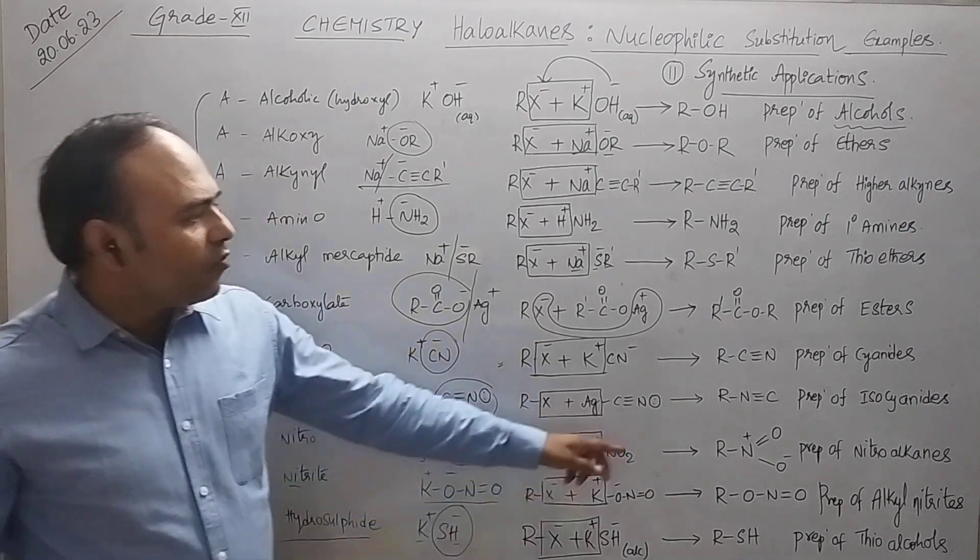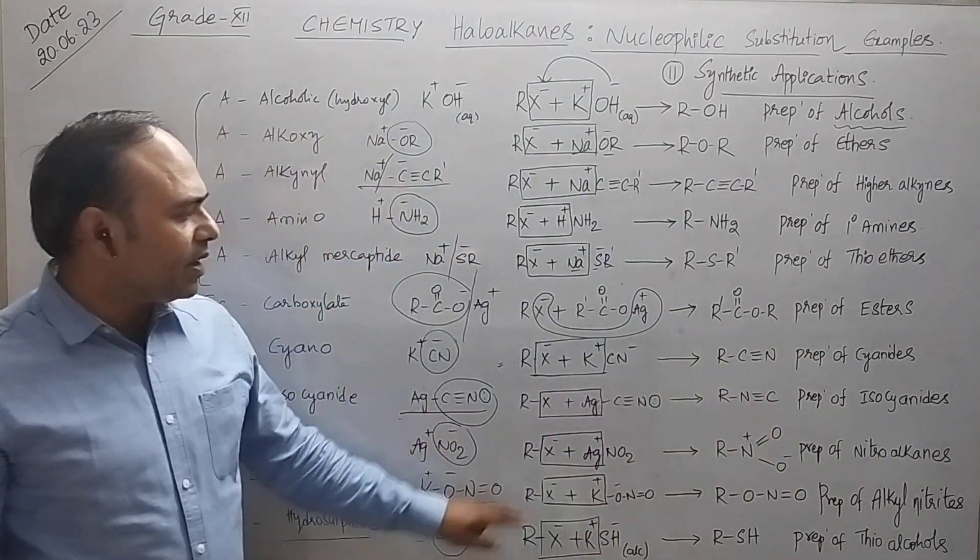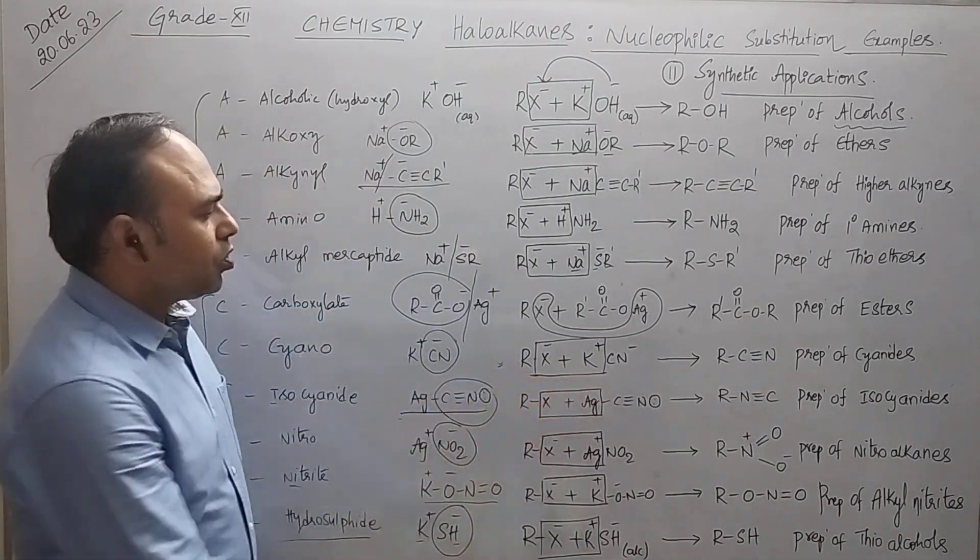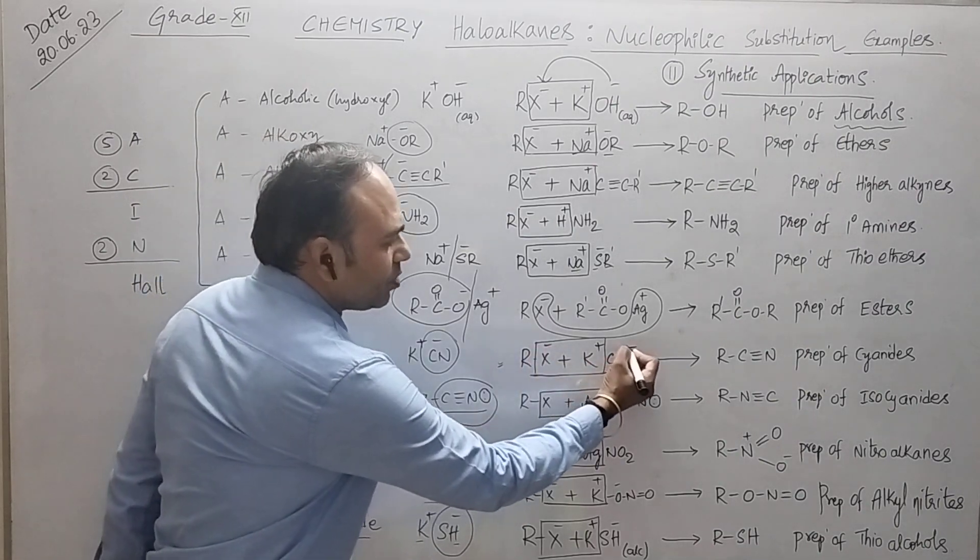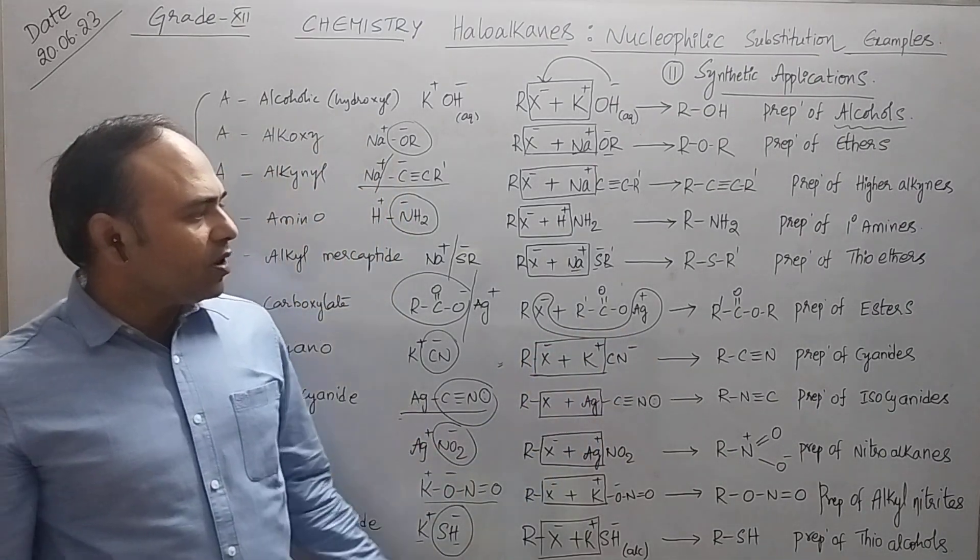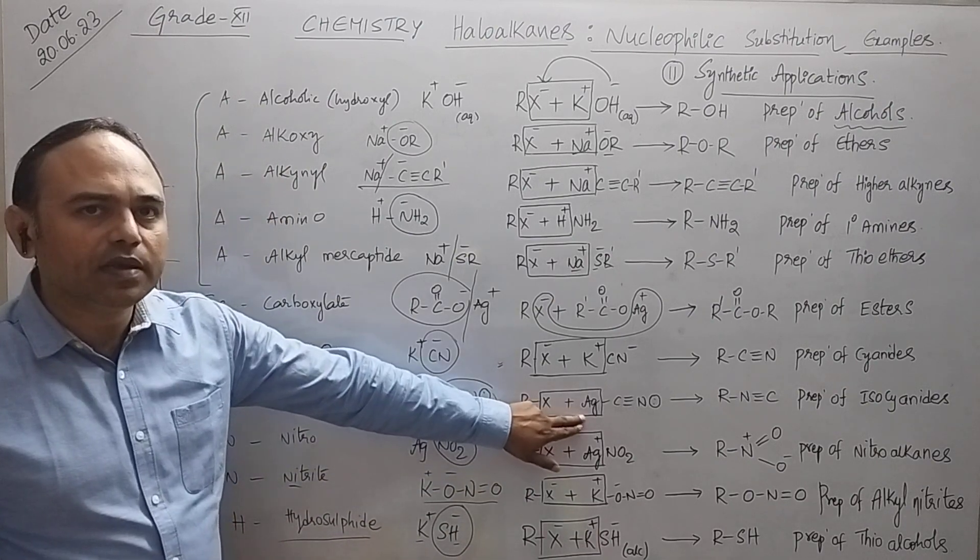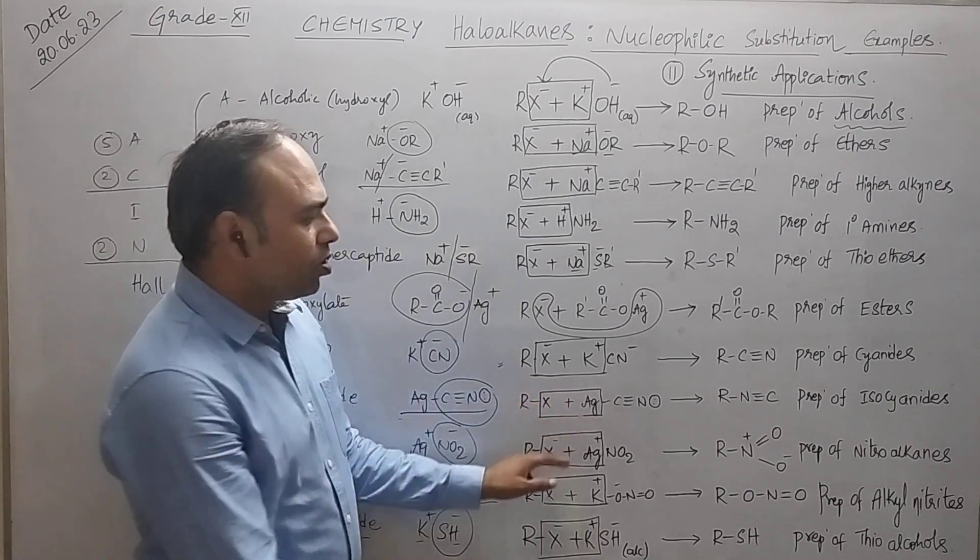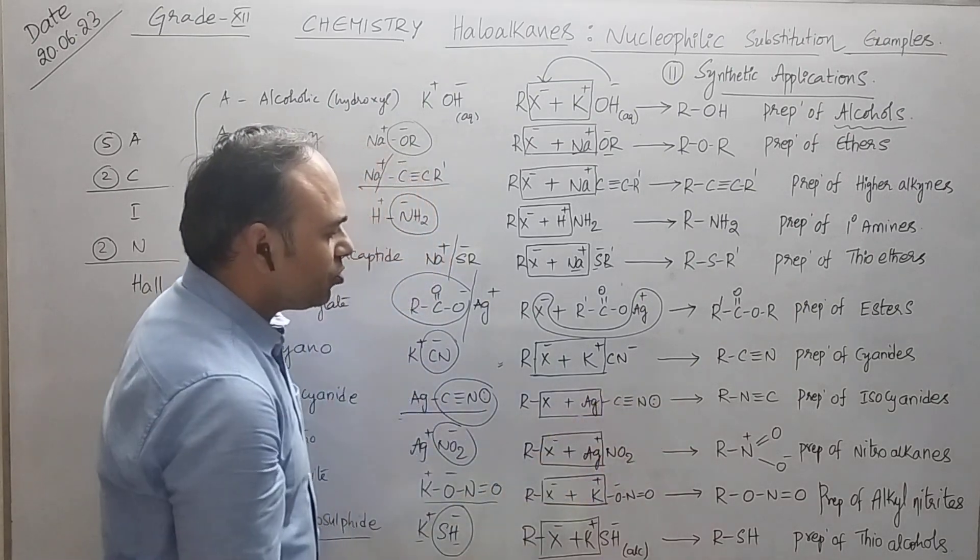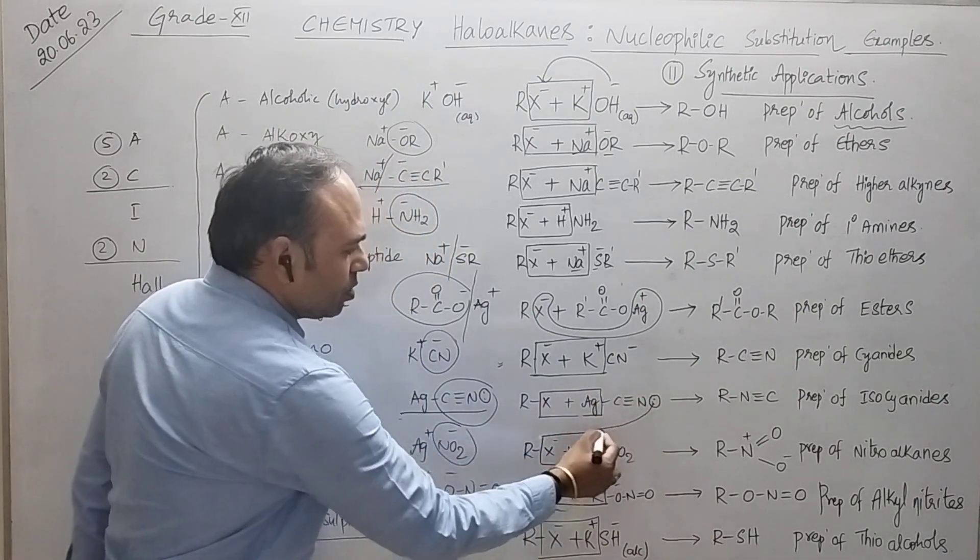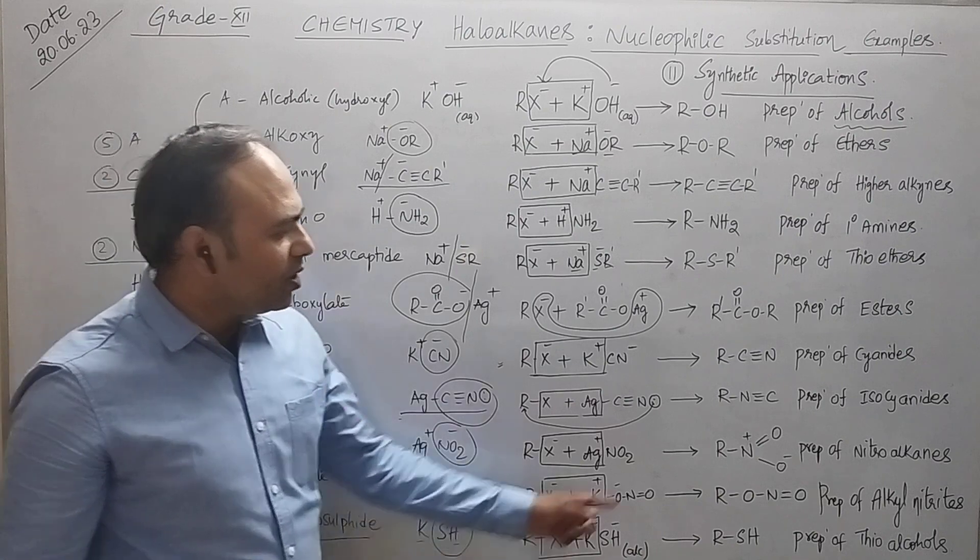Now the next is for the preparation of cyanides. What you will take? Potassium cyanide. So X minus is being substituted by CN minus, so that you will get cyanides. Next, you know that silver cyanide is a covalent compound, therefore the electron pairs present in the nitrogen will bind to the alkyl group and you will get RNC, nothing but isocyanides.